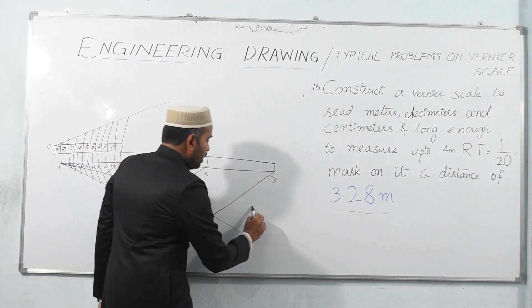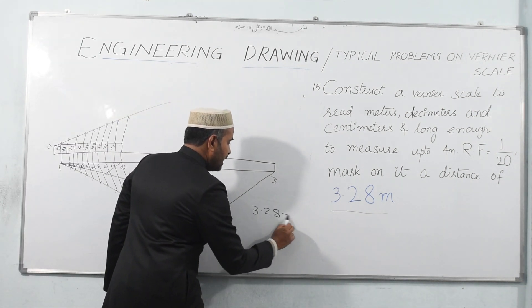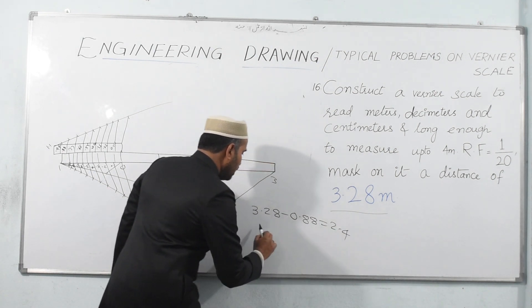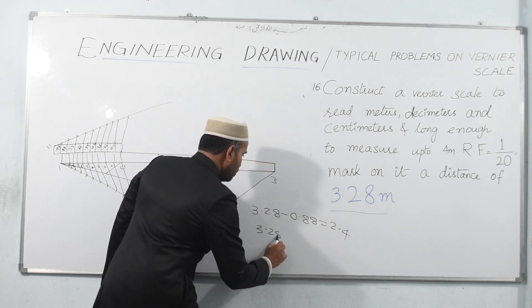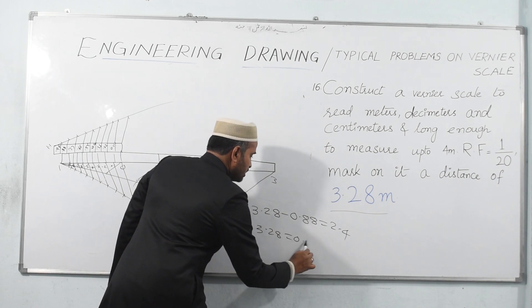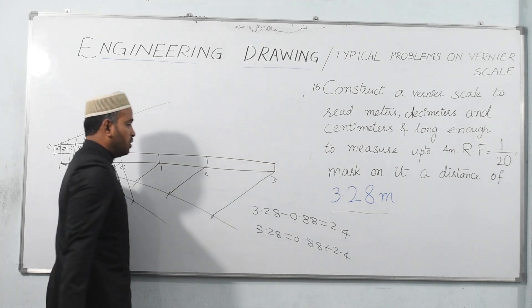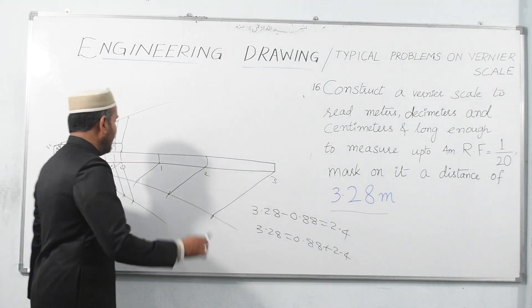So 3.28 minus 0.88, that becomes 2.4. So 3.28 is equal to 0.88 plus 2.4. So 0.88 is ready.